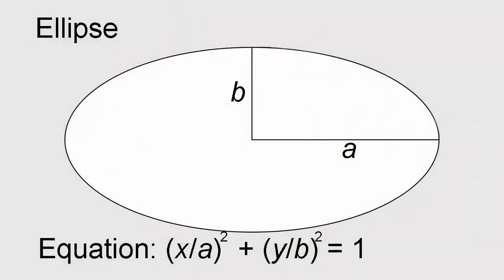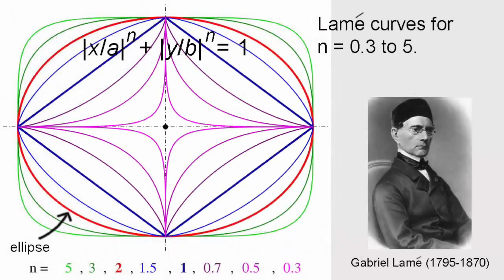The equation of a run-of-the-mill ellipse is x over a squared plus y over b squared equals 1, where a is half the length of the ellipse's longest axis and b is the half length of its shortest axis. In the 19th century, French mathematician Gabriel Lamé studied the family of curves produced by the more general equation: the absolute value of x over a to the n, plus the absolute value of y over b to the n, equals 1, where absolute value is just the unsigned value and n is bigger than 0. Not surprisingly, the family became known as Lamé curves. The ellipse is just the Lamé curve for which n equals 2.